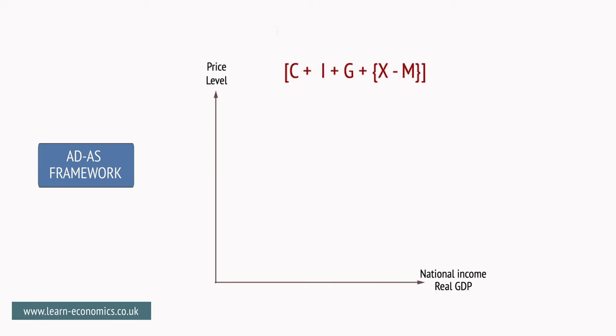There is a simple formula for AD, which is: Aggregate Demand equals consumption plus investment plus government spending plus exports minus imports.